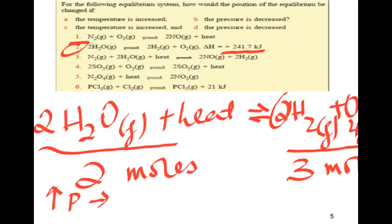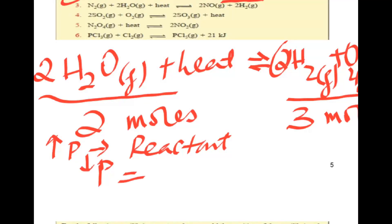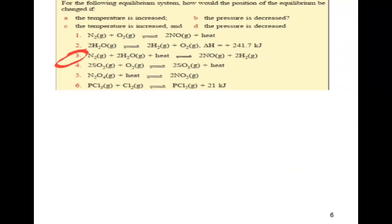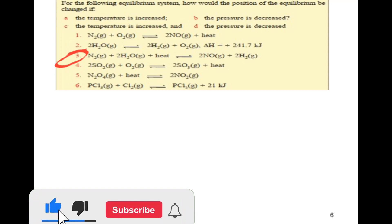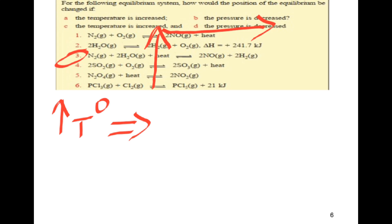If we increase the pressure of the system, the reaction will proceed towards the side with the fewest number of moles. So we count moles on the reactant side and the product side. For the endothermic reaction, we determine the number of moles. If you increase the temperature of the system, equilibrium shifts toward the product.